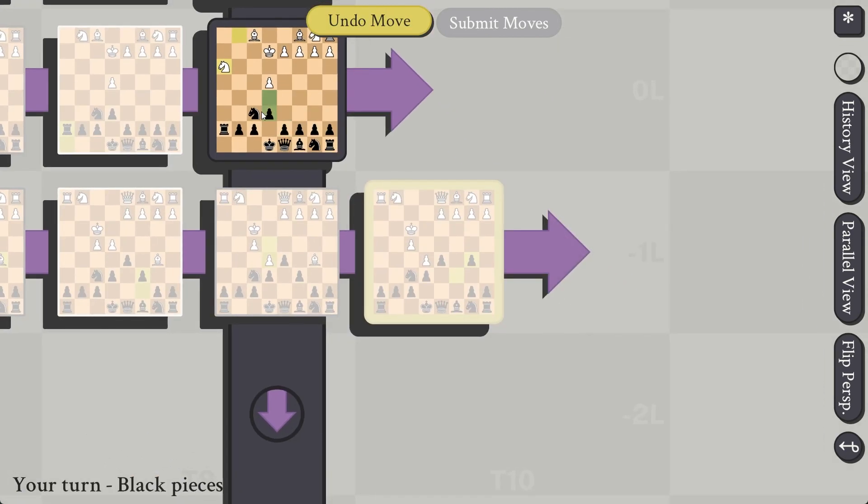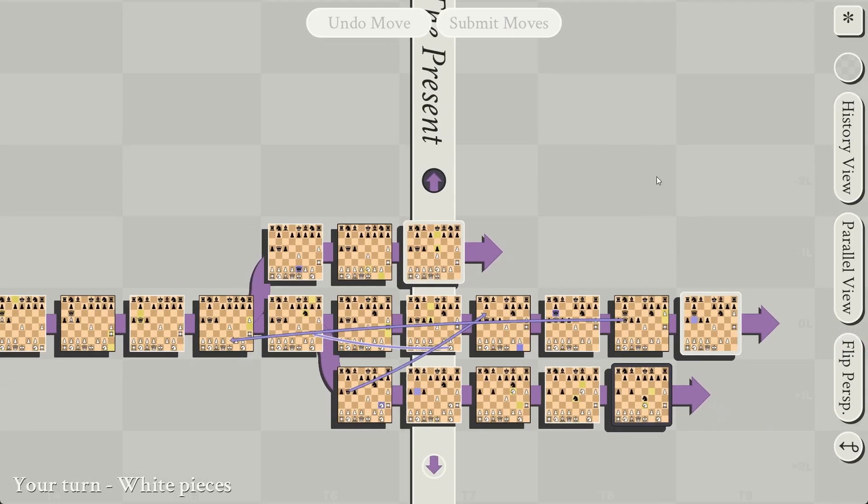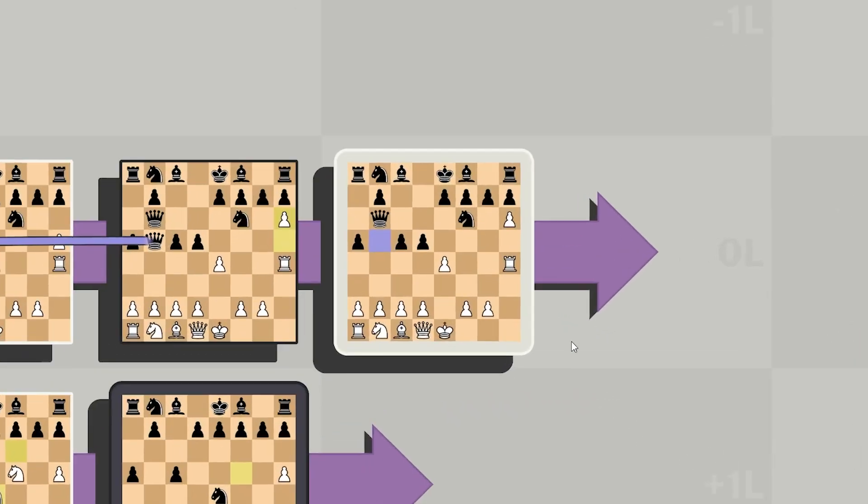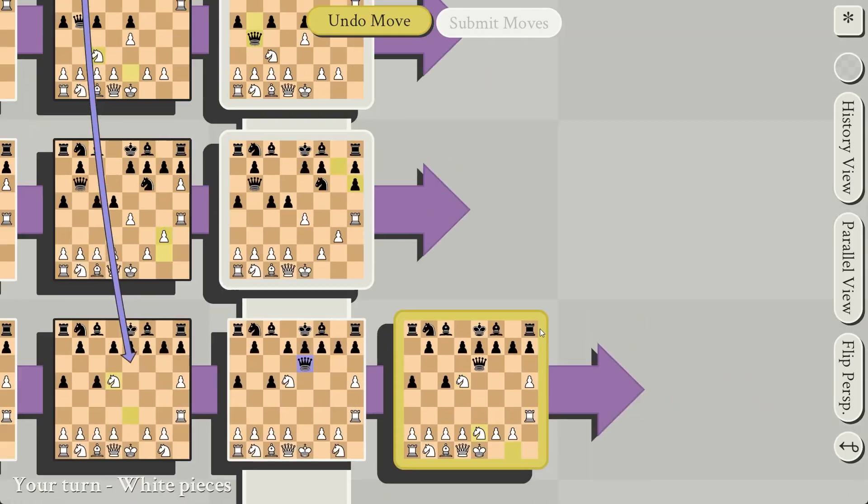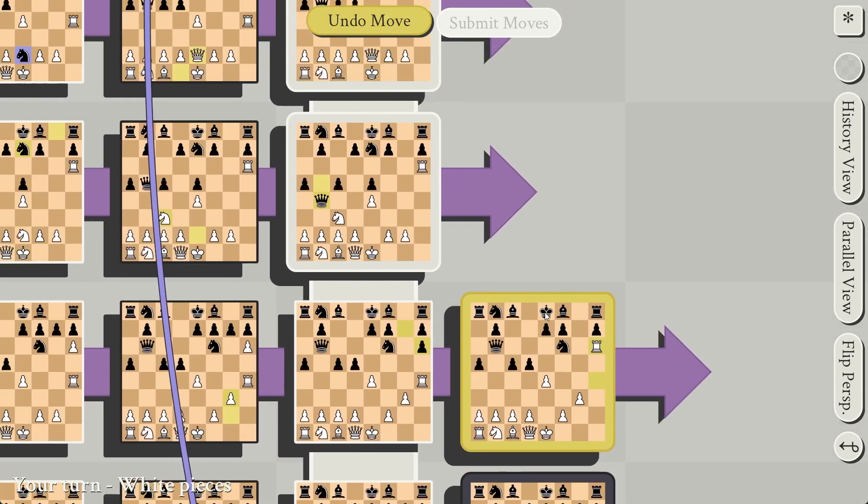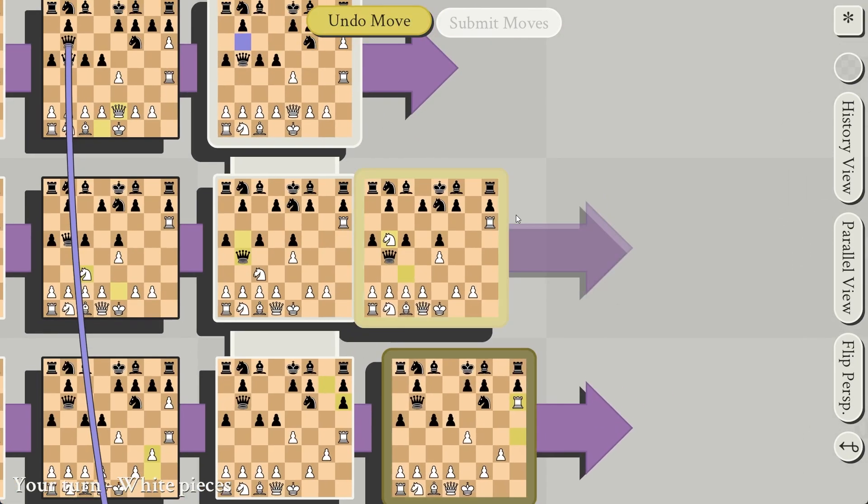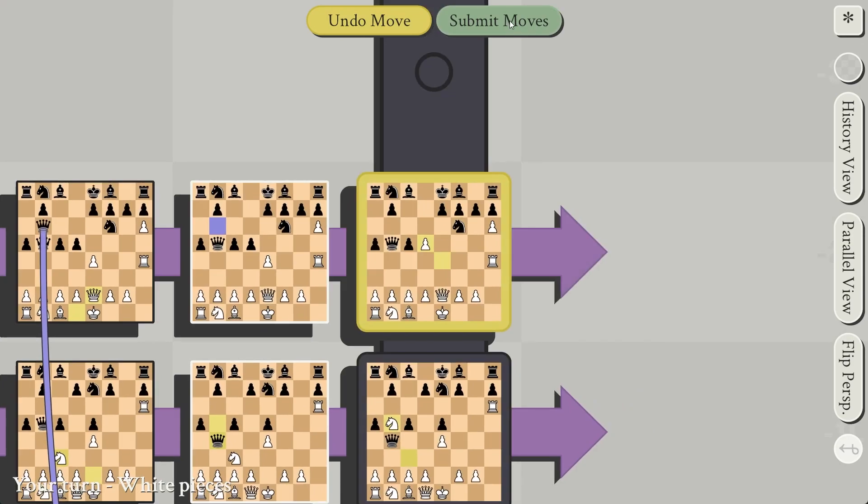You must always make a move in every timeline in the present on your turn. If it's your turn in the future, you can make moves up there if you want, but they won't have an impact until the present catches back up. If you cannot make a move in one of these timelines in the present, which is incredibly unlikely, it would be checkmate because you cannot advance the present and your opponent would win.